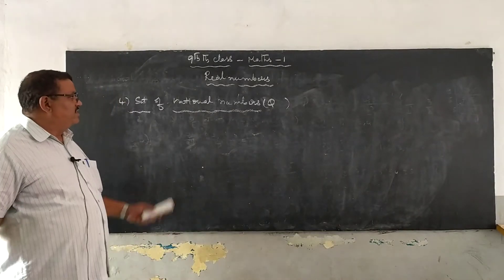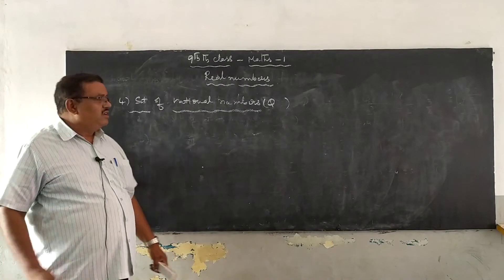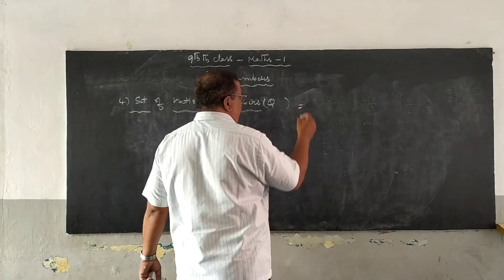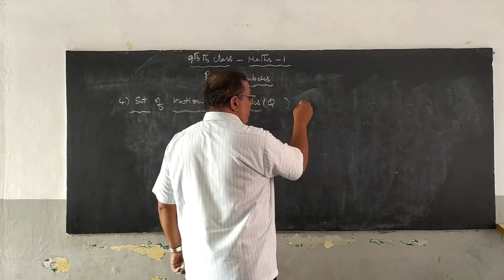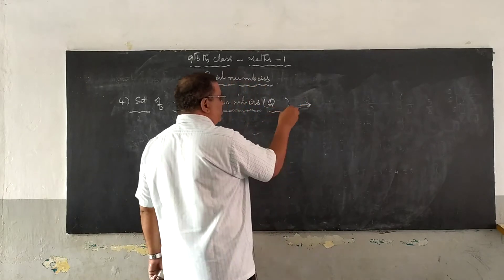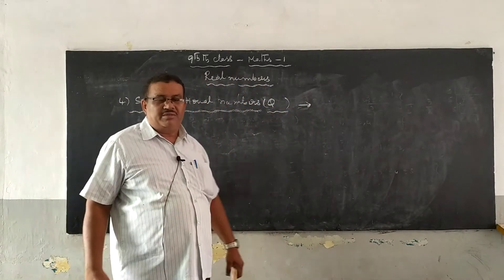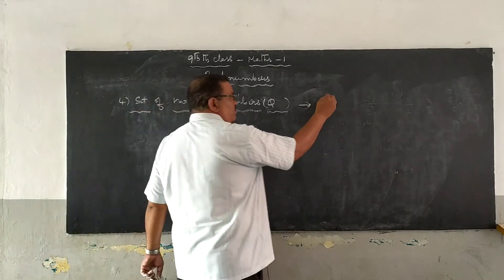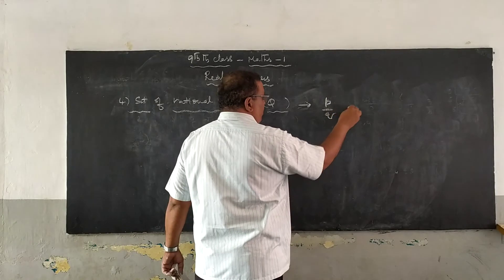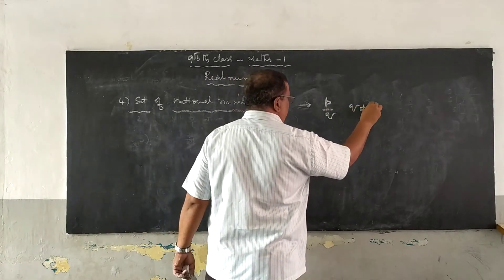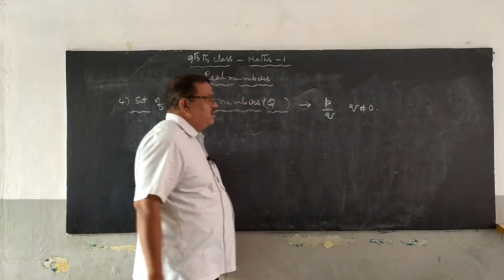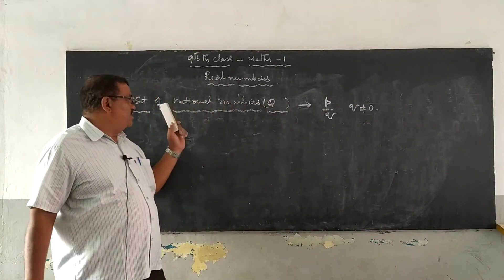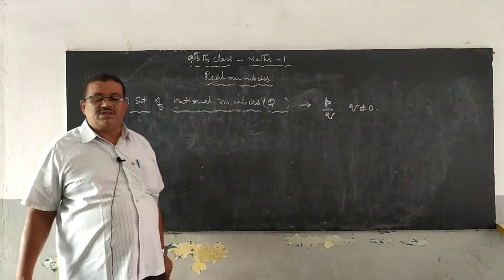Next, the set of rational numbers. How do we represent the set of rational numbers? You have already known this in eighth standard, but once again I will say: any rational number which is in the form of p/q, where q ≠ 0 and p, q belong to the set of integers — such types of numbers are said to be the set of rational numbers.